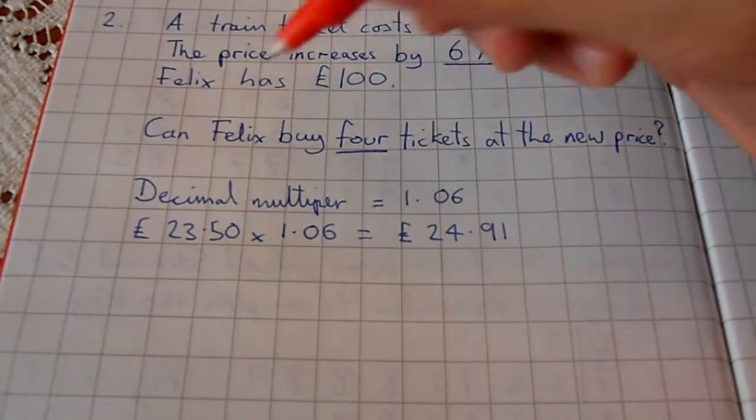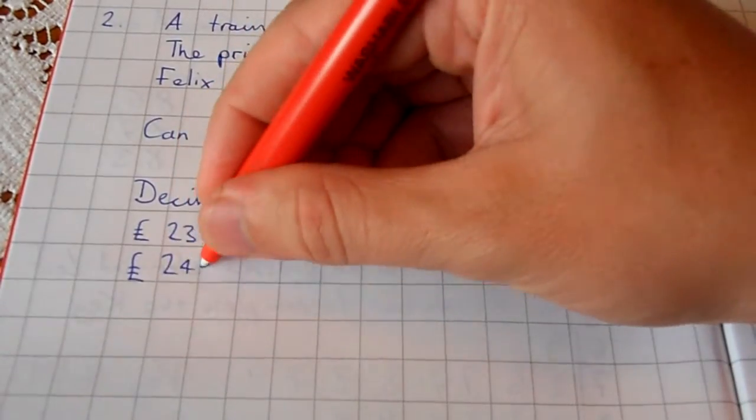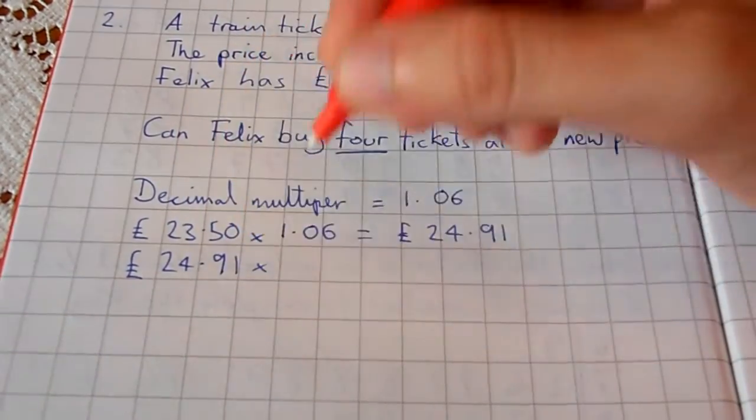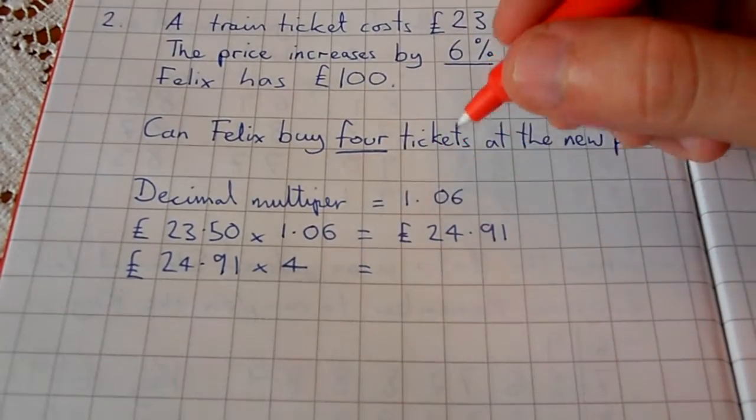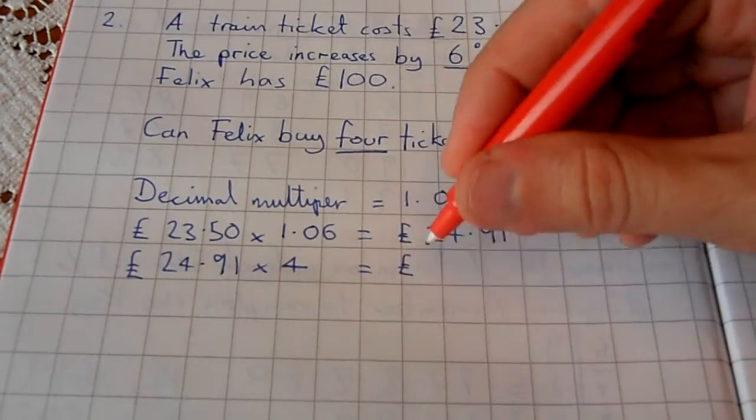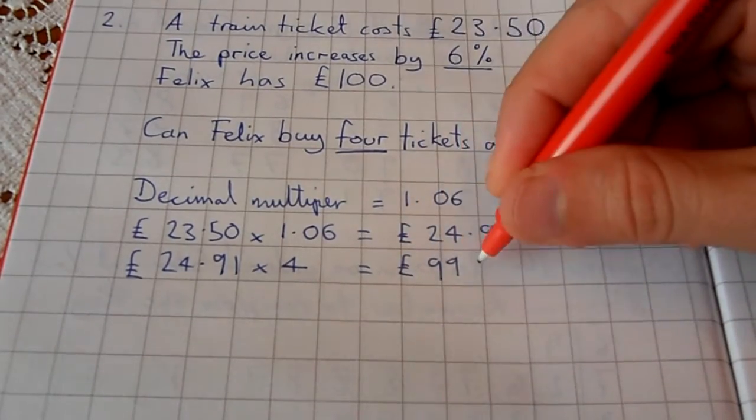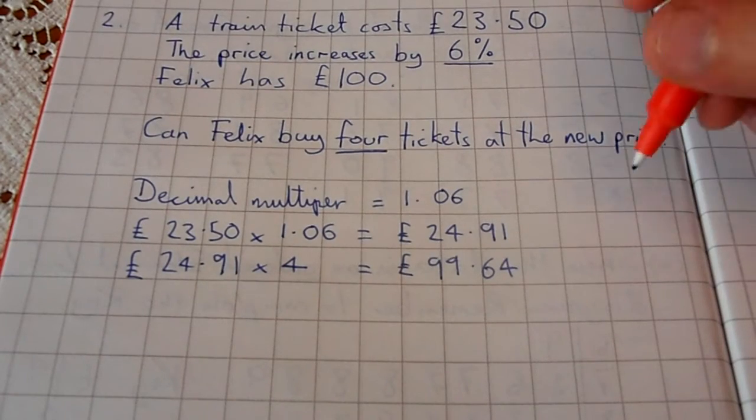Now we multiply that new price by 4: £24.91 × 4. Work that out—we have a calculator in this paper, remember—so bang that into your calculator and you'll get £99.64.